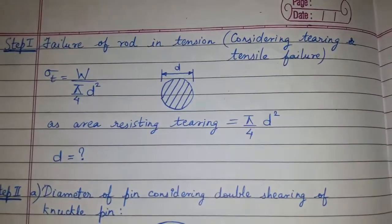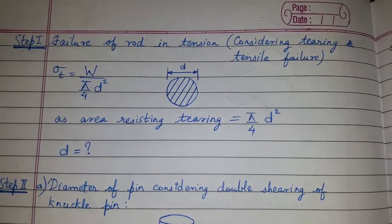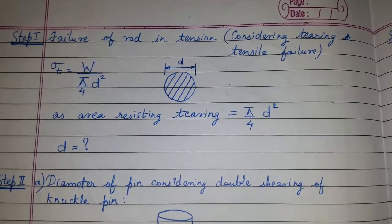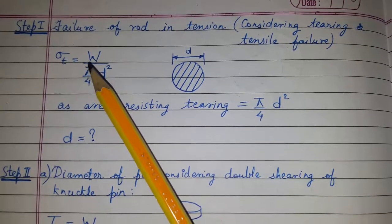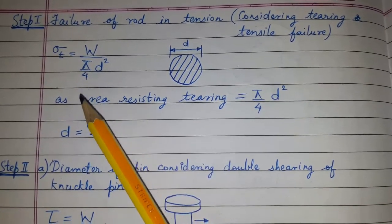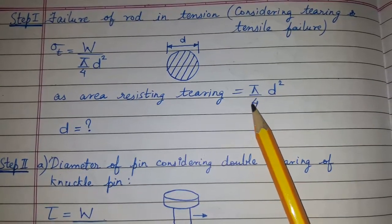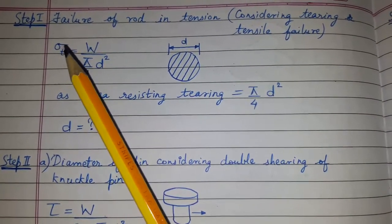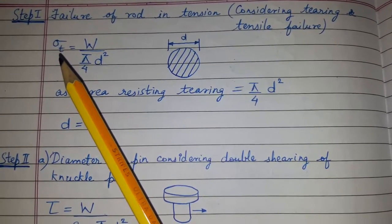Step 1: we have to design for failure of rod in tension, considering tearing or tensile failure. Tensile stress is equal to load upon the resisting area. The area resisting the tearing will be π/4 × d². From here we can find d. The permissible tensile stress will be given in the problem.